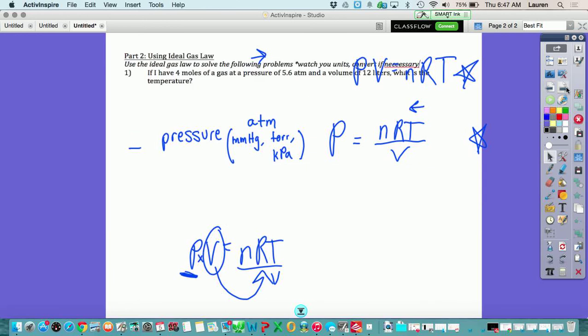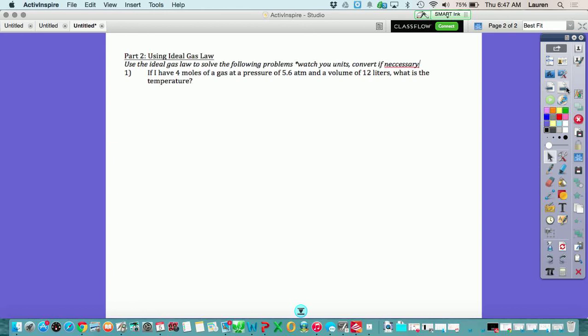Now I'm going to do one of the example problems for you. This problem says I have four moles of a gas at a pressure of 5.6 atm and a volume of 12 liters. What is the temperature? So again, the equation we're using is PV equals nRT.